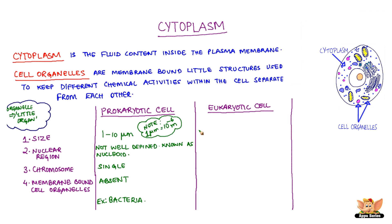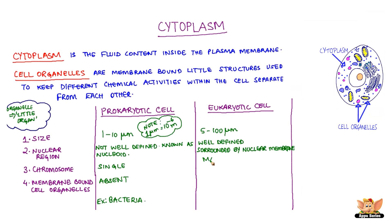Eukaryotic cells are larger than prokaryotic cells, ranging from a size of 5 to 100 micrometers. The nuclear region is well defined and is surrounded by a nuclear membrane. There are many chromosomes present. The organelles are membrane-bound. Plant and animal cells are eukaryotic.